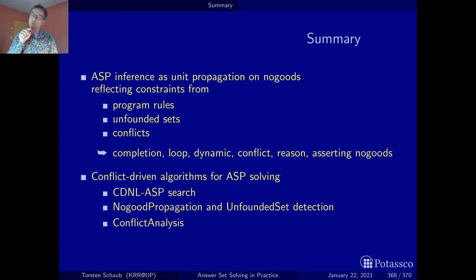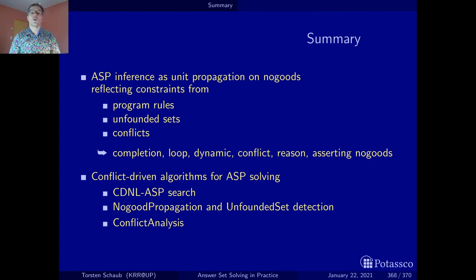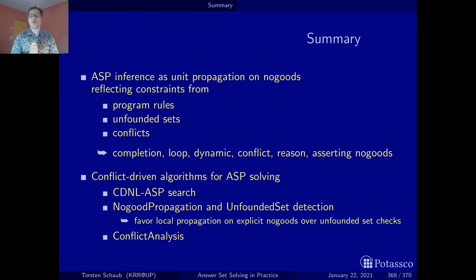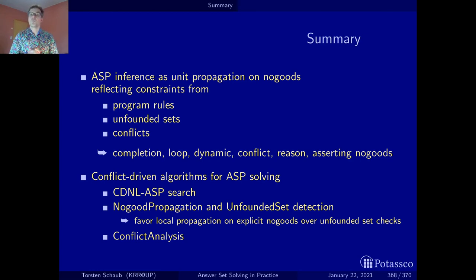Let me pinpoint one particularity not to forget. The search procedure — unit propagation and conflict analysis — these are also the cornerstones of satisfiability testing solvers. But unfounded set detection is a very ASP-specific thing, as are the reasoning modes built on top of it. What distinguishes our approach from others is the preference for local propagation on explicit no-goods: we pick one atom out of an unfounded set, generate the loop no-good for it, and immediately go back to unit propagation, rather than determining the greatest unfounded set as done by previous solvers.